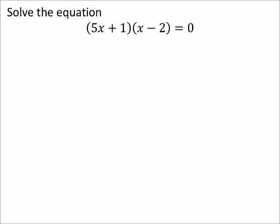So, we're looking again at A times B equals zero. No need to move everything to one side because it's already there. So, either 5x plus 1 is equal to zero, or x minus 2 is equal to zero.